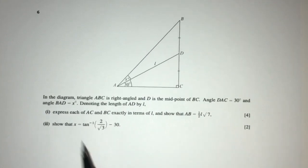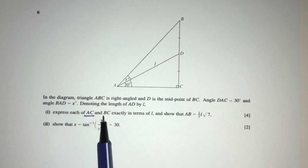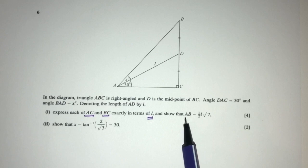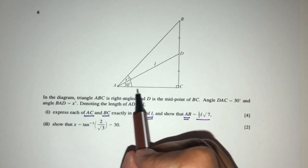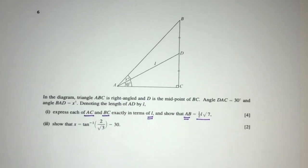Now we have AD given to you by the length L. So part one: express AC and BC exactly in terms of L, and show that AB is given by this expression. First let's find AC. AC is this length.